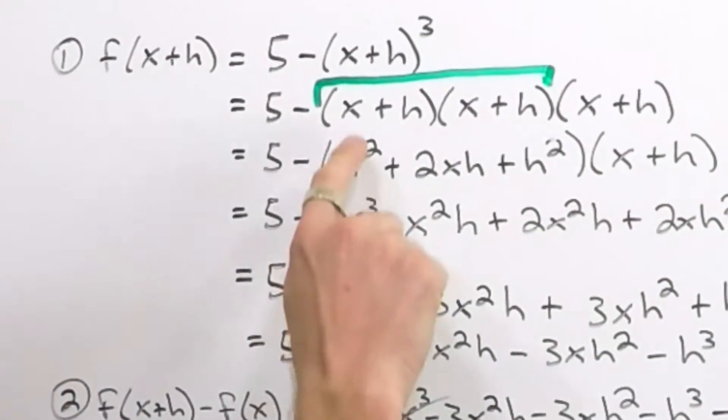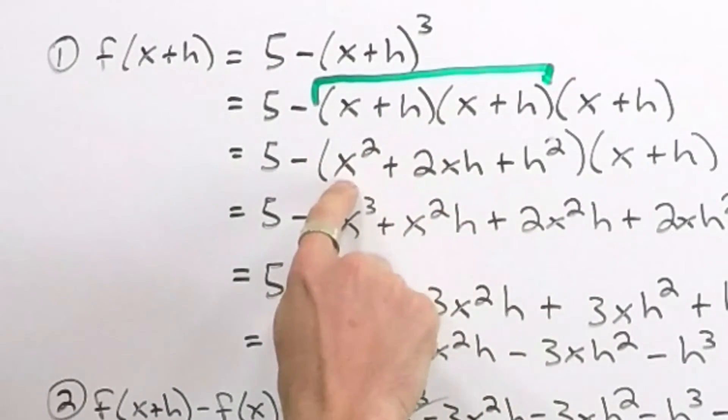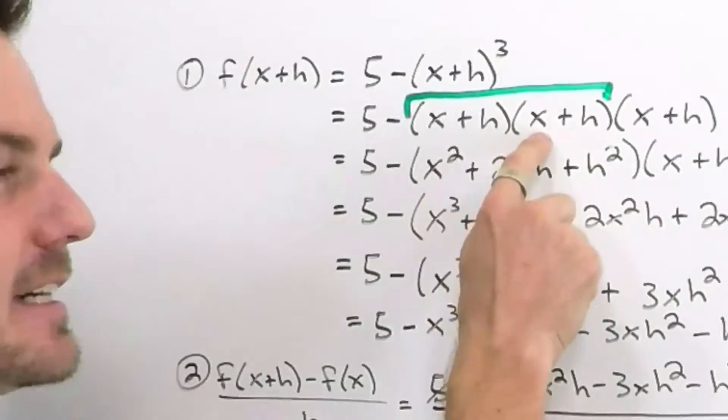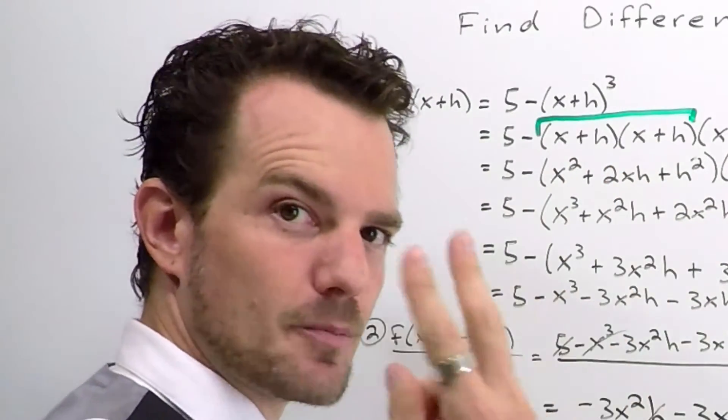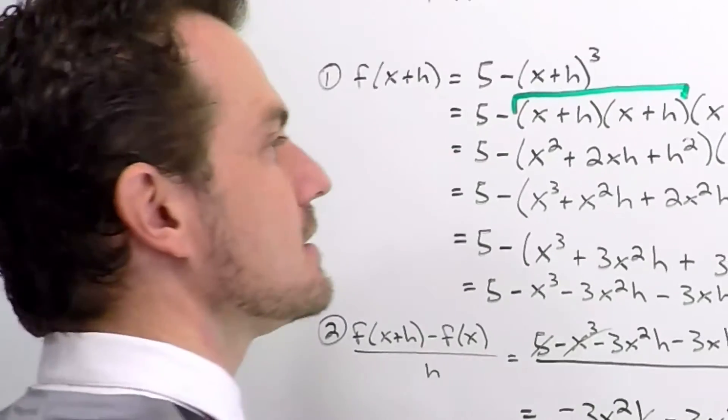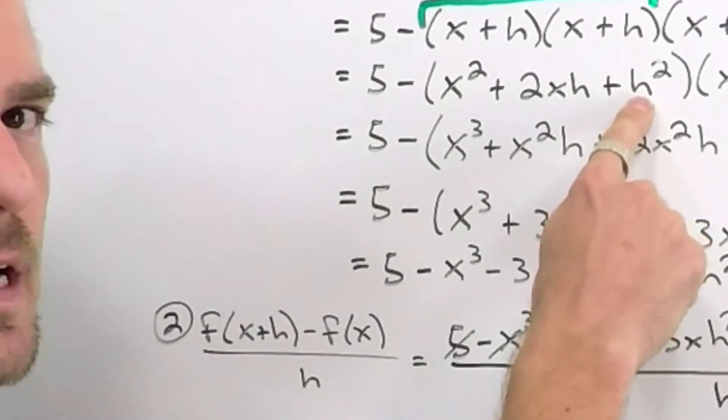So in doing that, we multiplied x times x to get us x squared, x and h, and then h and an x, so technically we'll end up with a two in the middle. There's some other videos you can look at if you didn't catch that here. The last one is h times h, which gives us h squared.